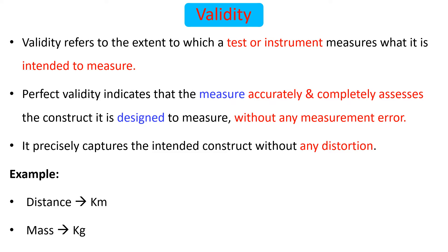Validity refers to the extent to which a test or instrument measures what it is intended to measure. Perfect validity indicates that an instrument accurately and completely assesses the construct it is designed to measure without any measurement error — it precisely captures the intended construct without any distortion.